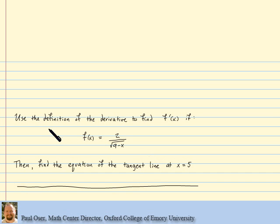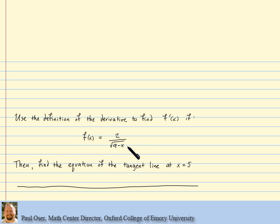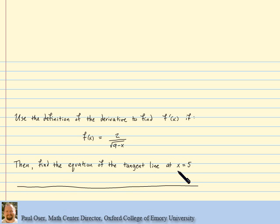In this problem we're asked to use the definition of the derivative to find f prime of x, given this particular definition for f of x. Notice it involves a fraction and a square root. We then have to turn around and find the equation of the tangent line at x equals 5. So two tasks to be done here.